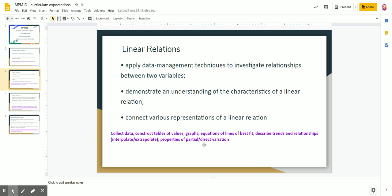We used interpolation to look within the data and extrapolation outside that data to make predictions. Then we looked at the difference between partial and direct variation. Direct variation was if your line starts at (0,0), and partial variation was if your line starts somewhere else on the y-axis.